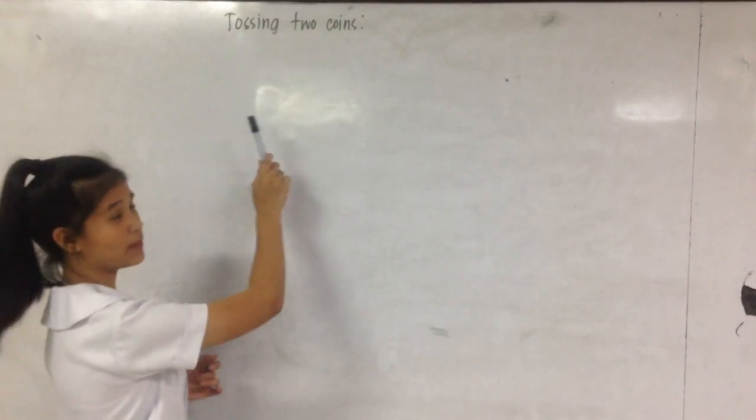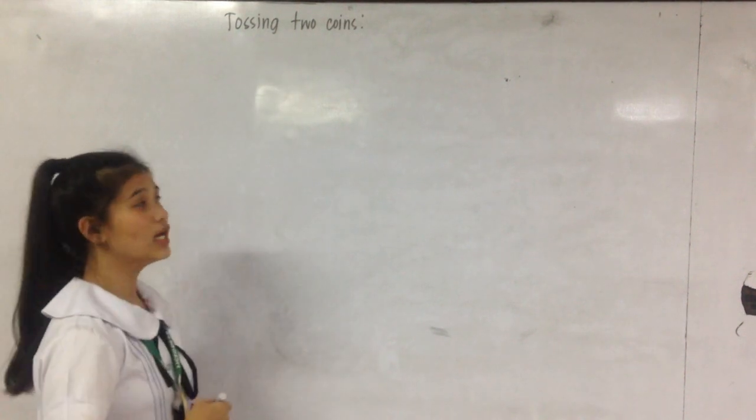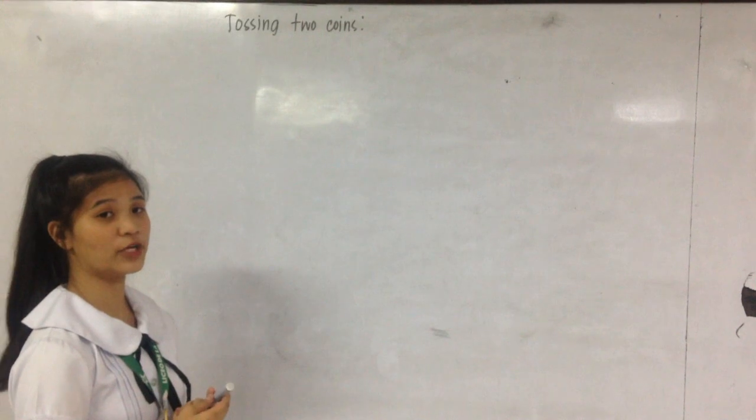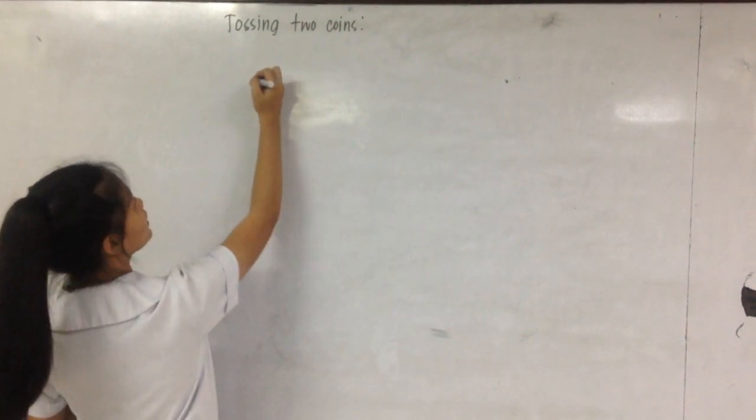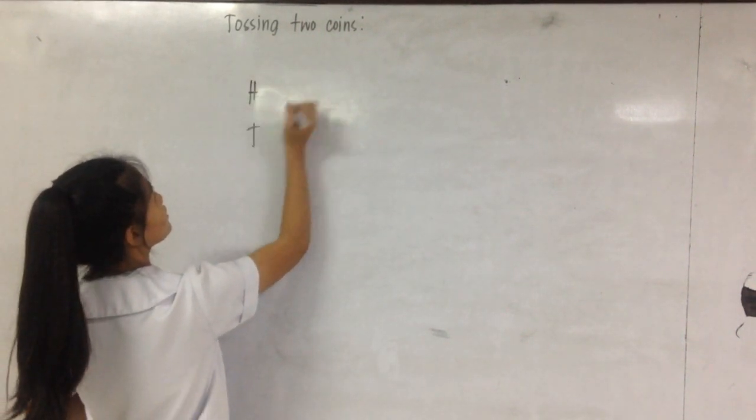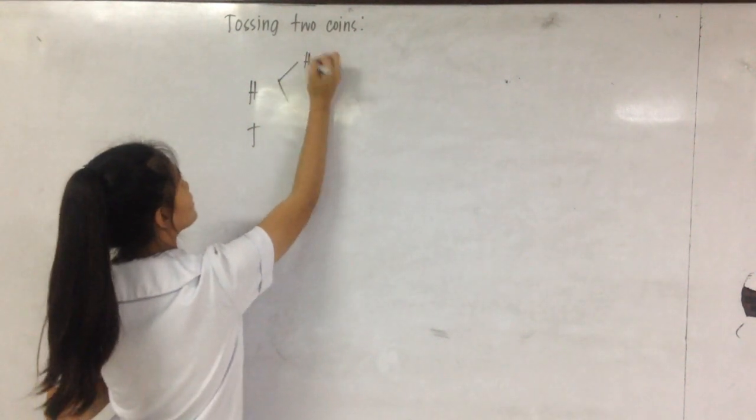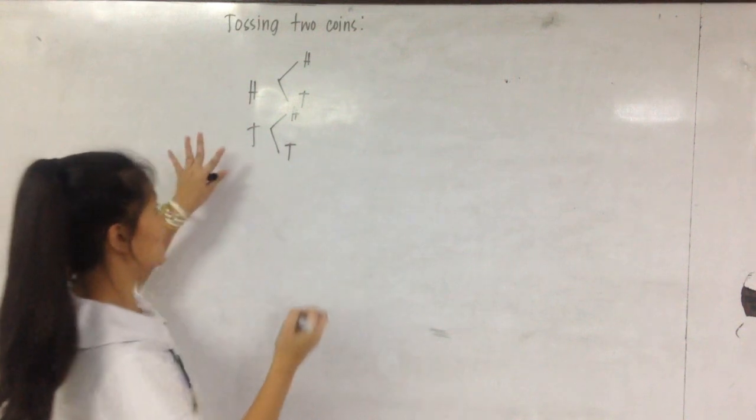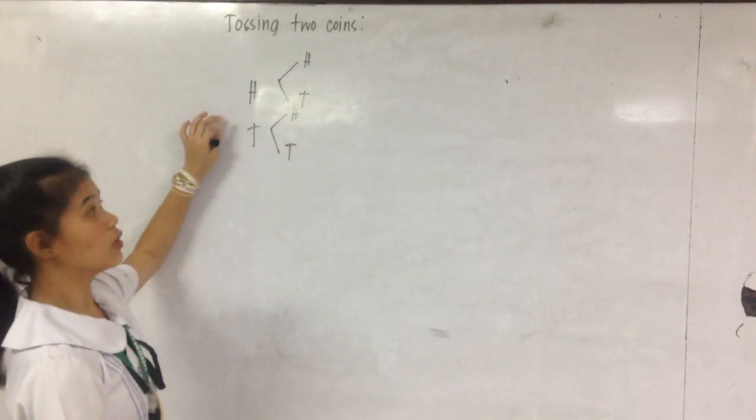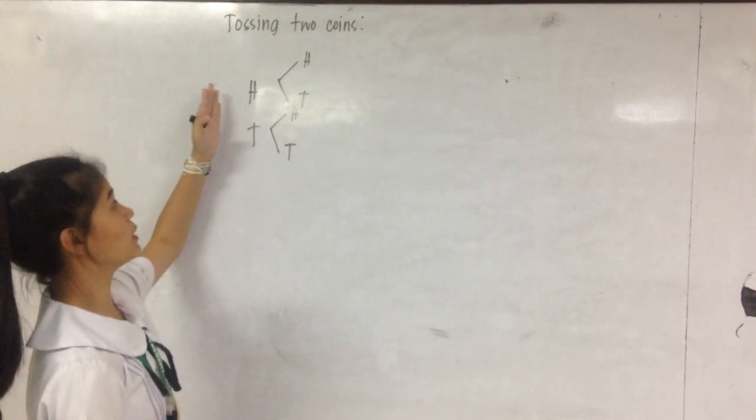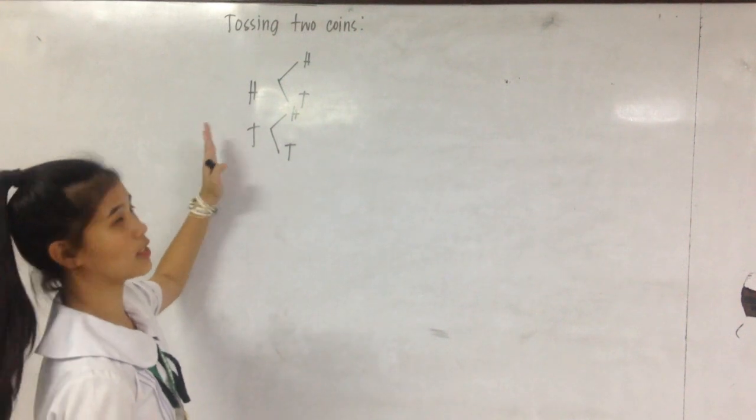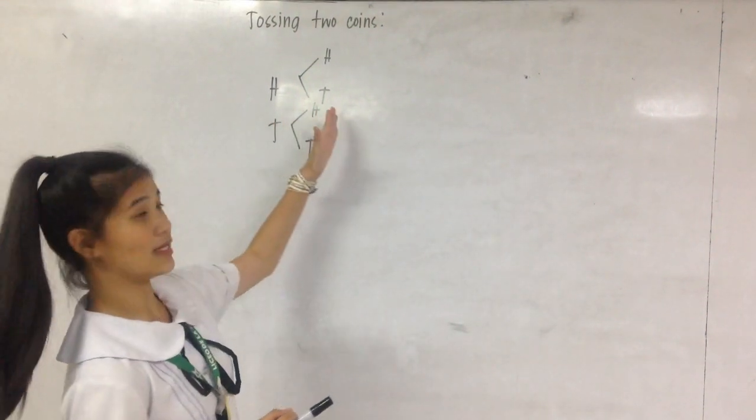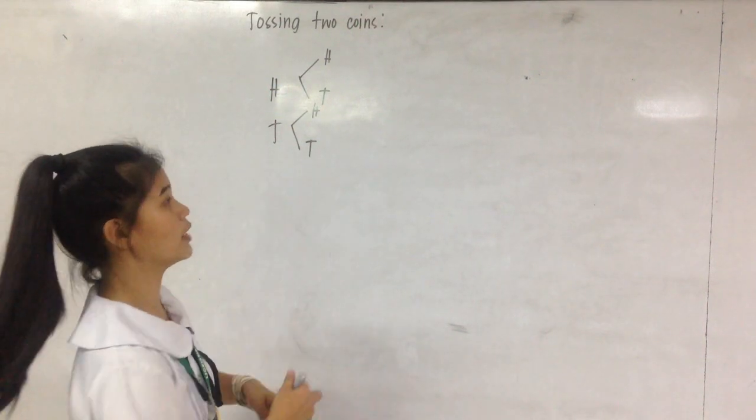We have an experiment of tossing two coins. Let's determine the sample space if we're going to use the tree diagram. This is the tree diagram. Each branch will be the possible outcomes for only one coin. So we're going to toss two coins. We're going to extend the branches once more.